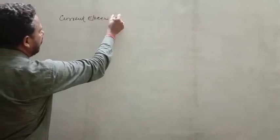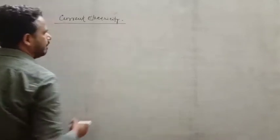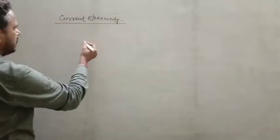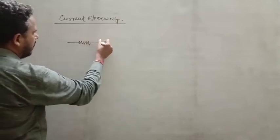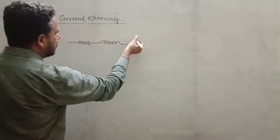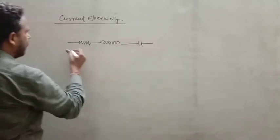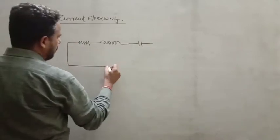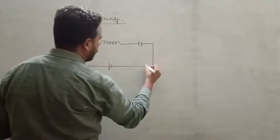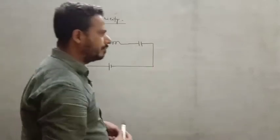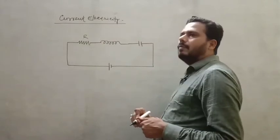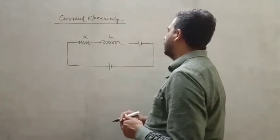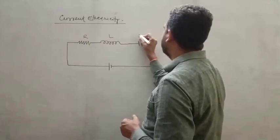So current electricity is the name of this chapter. To understand it, consider a simple circuit in which a number of elements are present — a resistor, an inductor, a capacitor, and one more component, an EMF. In this circuit we have one resistor whose resistance is R, one inductor whose inductance is L, one capacitor whose capacitance is C, and one EMF.